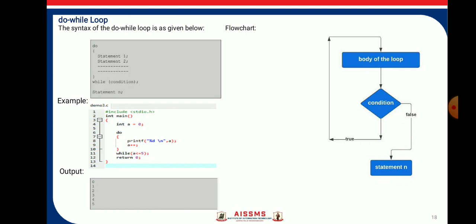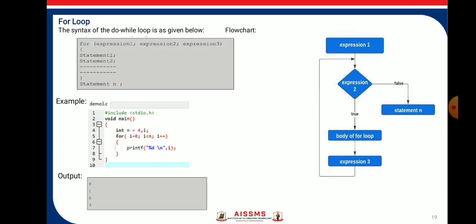Here is an example of the while loop. Next is the do-while loop. The do-while loop is also known as the exit loop because the statements are executed first and then the condition is checked. Here is the flowchart and syntax of the do-while loop.